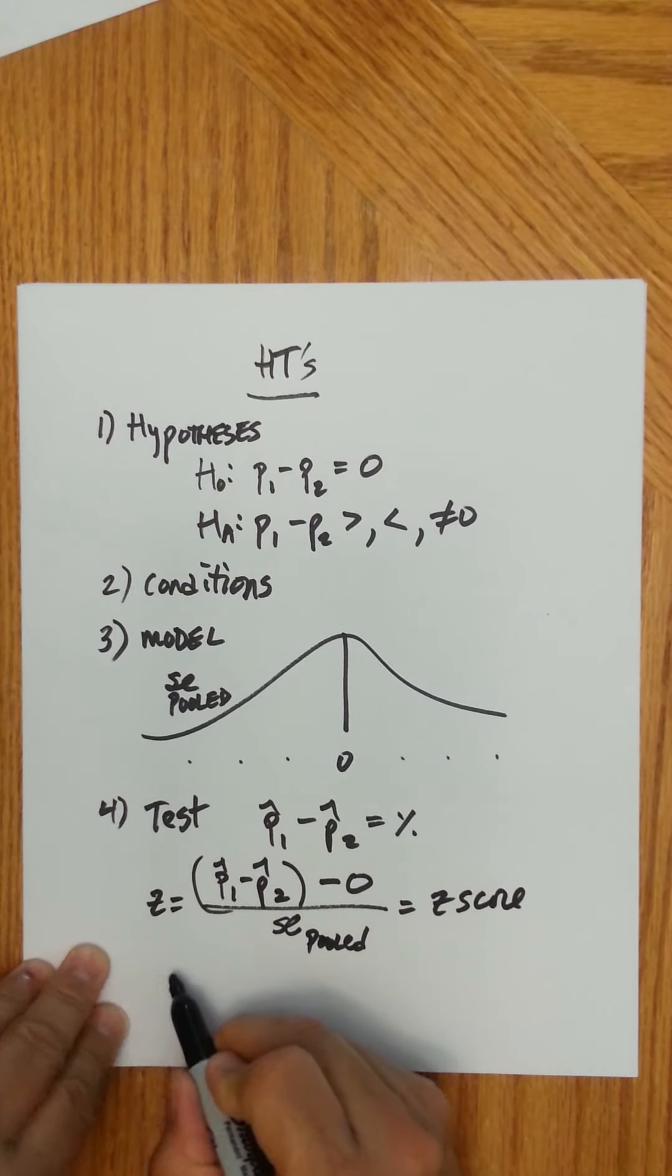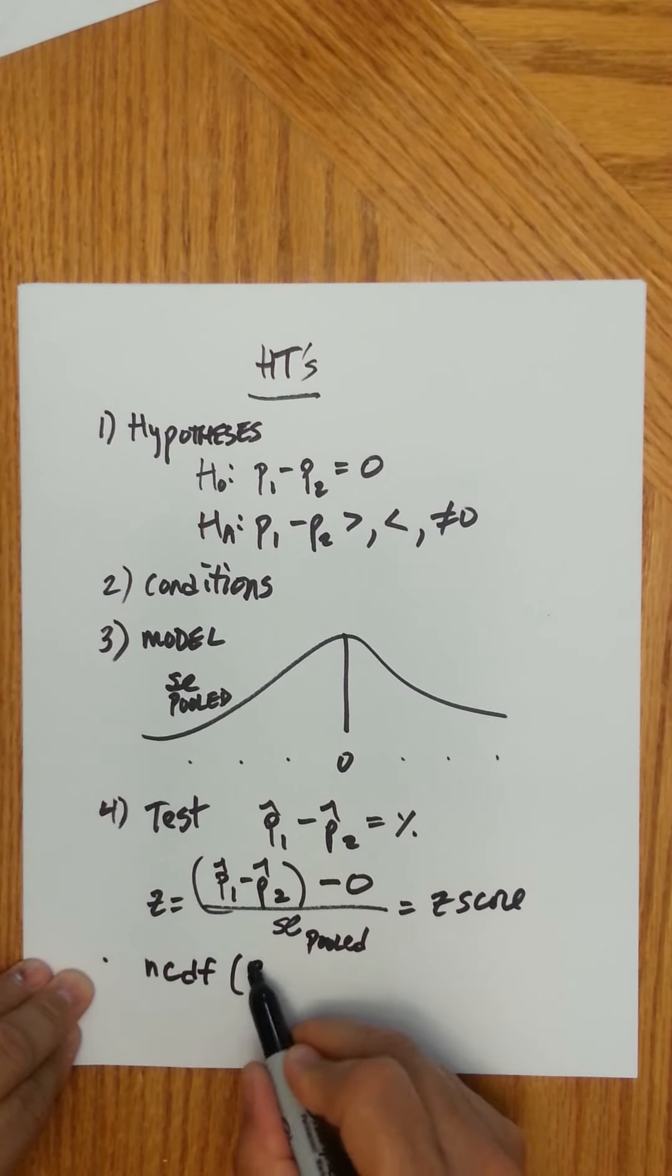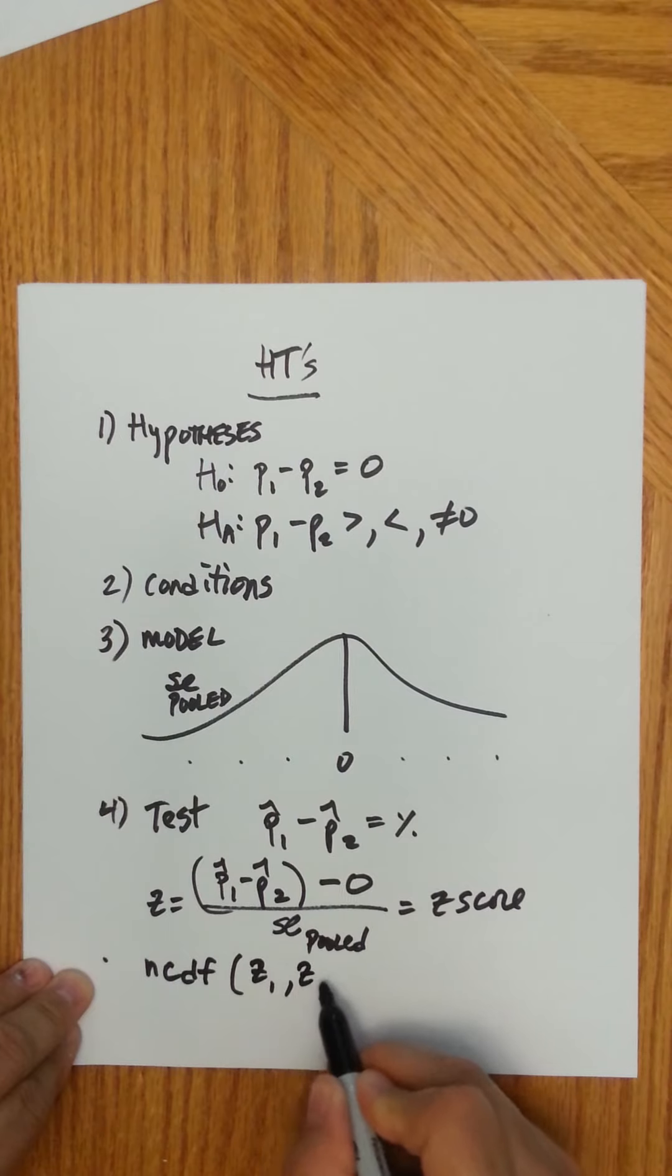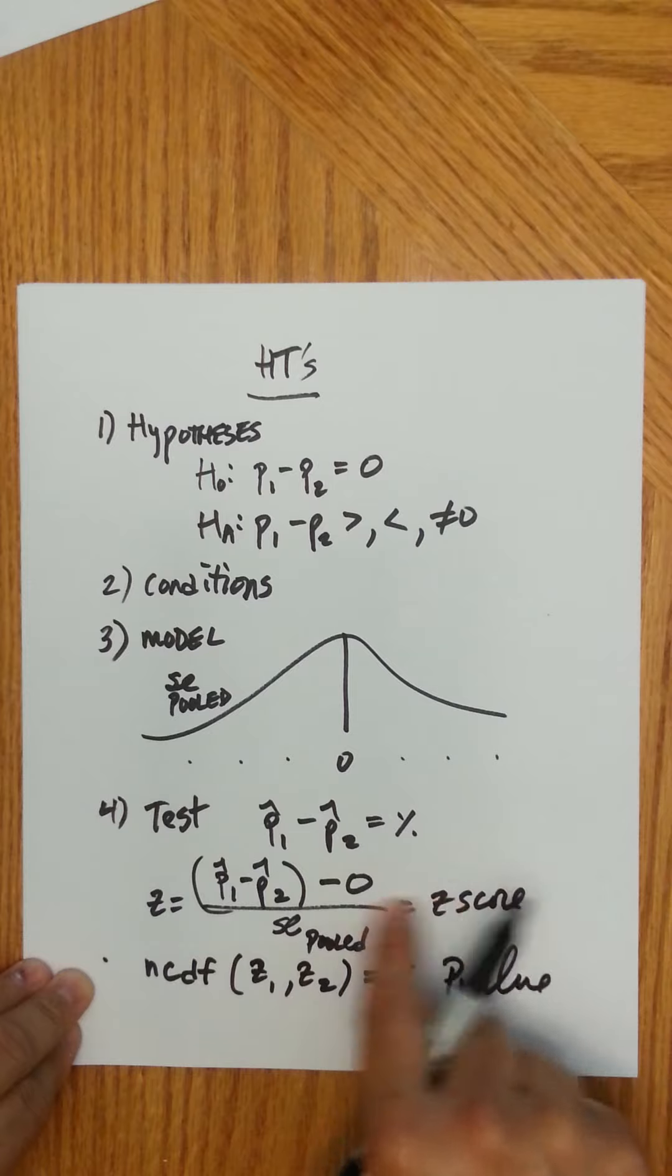And then from there, you're going to do normal CDF from whatever z-score one to z-score two. And you get a percent, which is your p-value. It's the probability of getting the sample differences, sample difference that you saw.